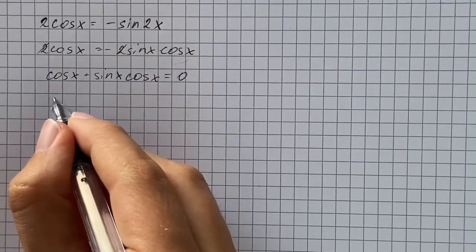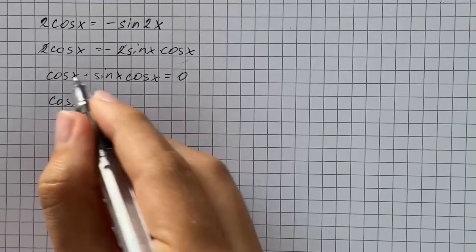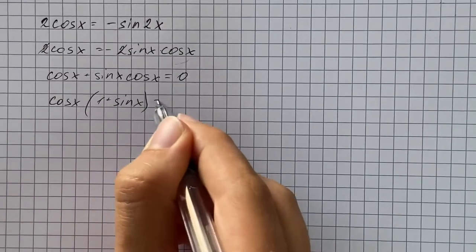Then we're going to factor, so that's going to be cosine of x times 1 plus sine of x.